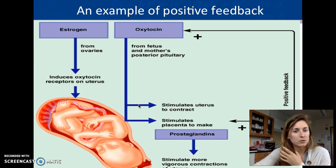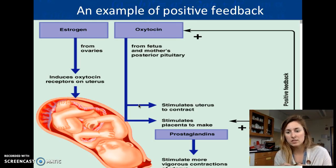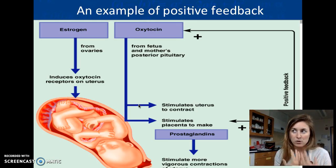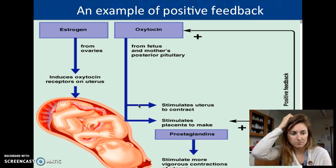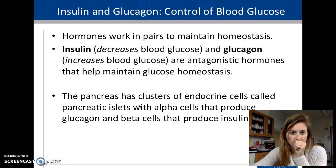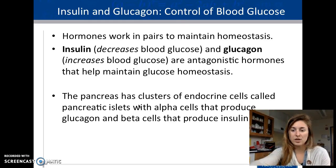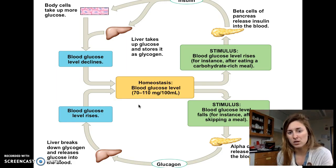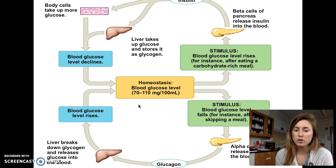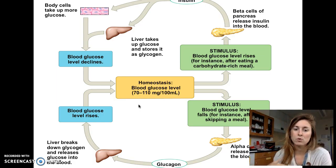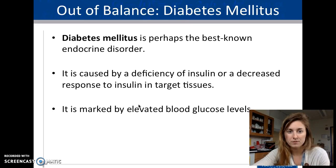An example of positive feedback is uterine contractions during childbirth — oxytocin is continually released as long as contractions are detected. For insulin and glucagon: insulin decreases blood glucose by reabsorbing sugar from the bloodstream, while glucagon increases blood glucose by releasing sugar back into the bloodstream. Diabetes results when this system fails.